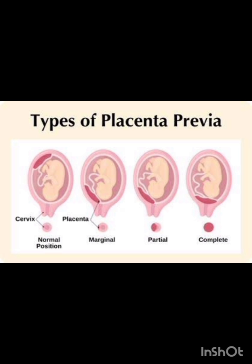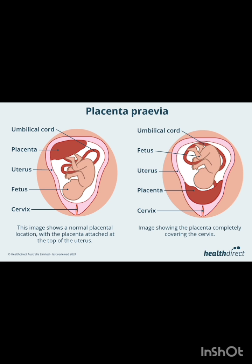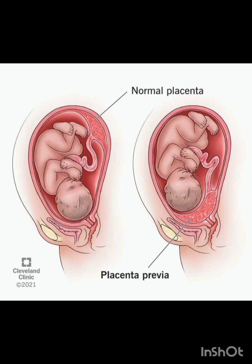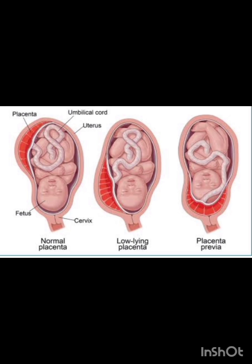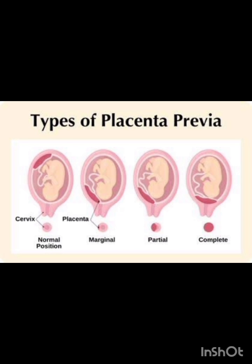Types of placenta previa. Placenta previa refers to a condition where the placenta partially or completely covers the cervix. There are different types. Type 1: Complete placenta previa — the placenta completely covers the cervical opening. Type 2: Partial placenta previa — the placenta partially covers the cervical opening.